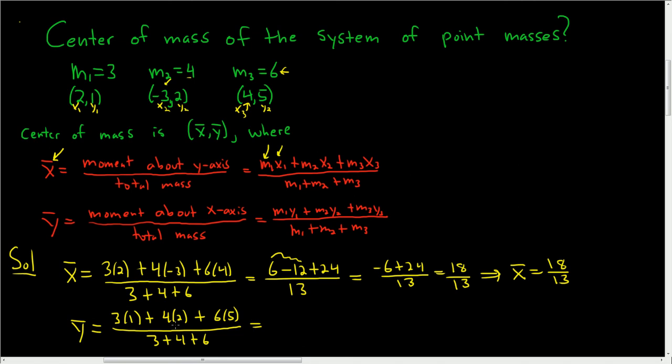This is equal to, let's see, 3 times 1 is 3, 4 times 2 is 8, and 6 times 5 is 30, all being divided by 13 again.